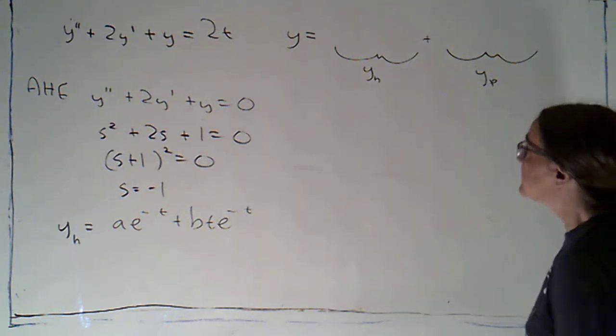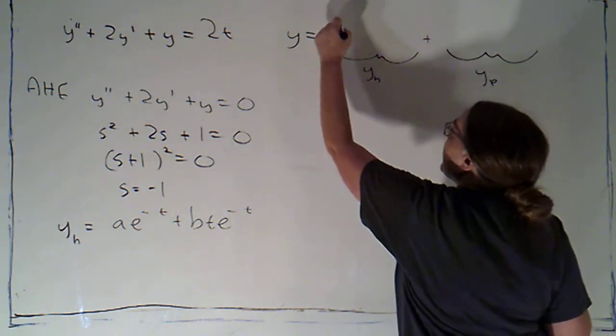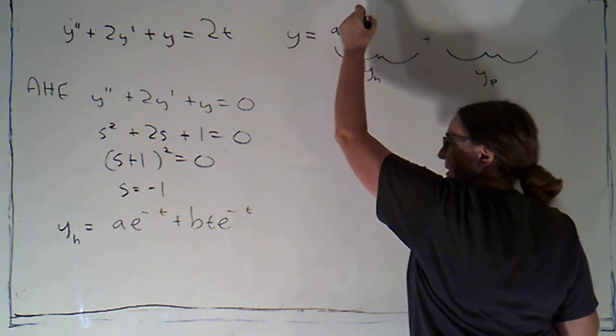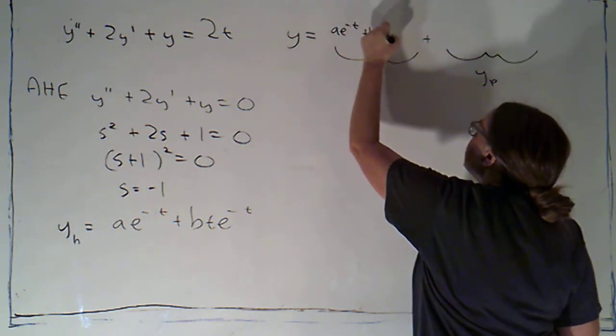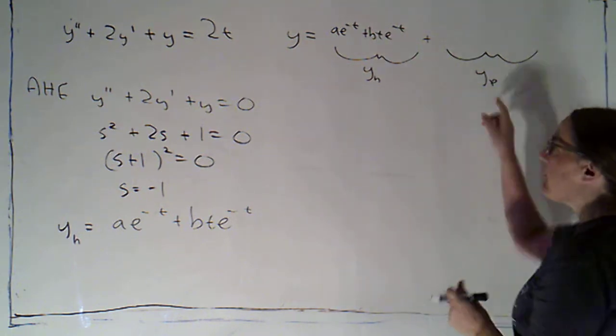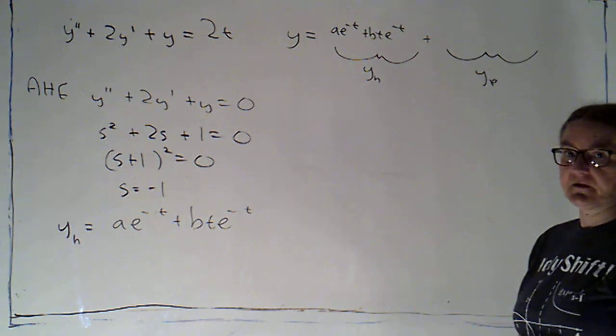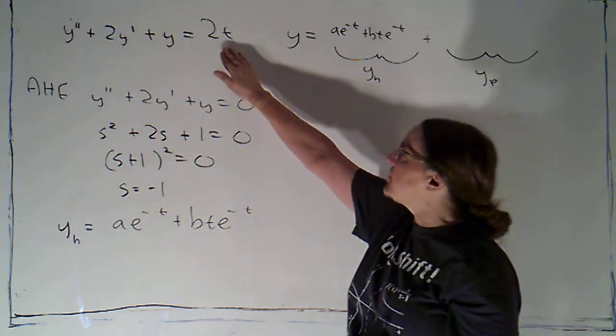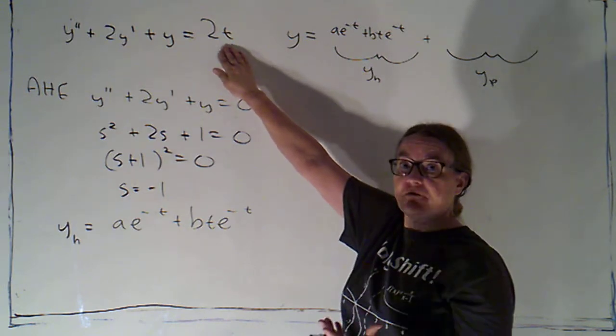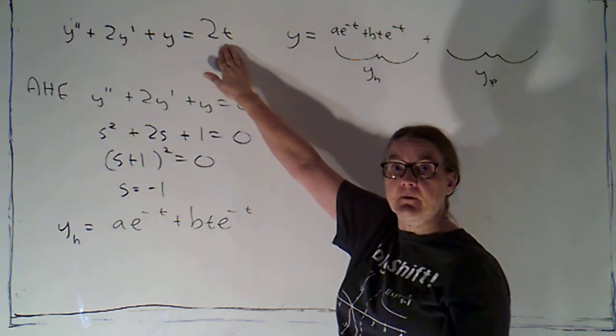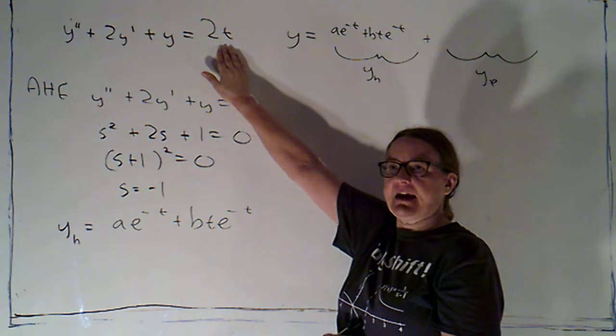Okay, so let's see. We've got this, a e to the negative t plus bt e to the negative t, and now I want to guess a particular solution. And the rule is, I generally guess the same sort of function that I have here. So you might think I'm just going to guess some t's,